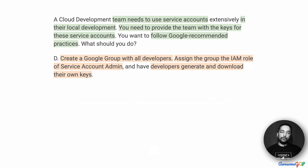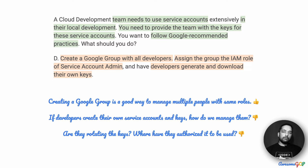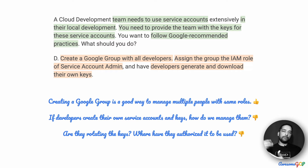Option D suggests that we create a Google group with all developers, assign the group the IAM role of Service Account Admin, and have developers generate and download their own keys. Unlike the previous option with Service Account User, Service Account Admin does not have that restriction — developers can create service accounts and the associated keys. Creating a Google group is a good way to manage multiple people with the same roles. Then assigning the group the role of Service Account Admin means they have permissions to create service accounts and keys.